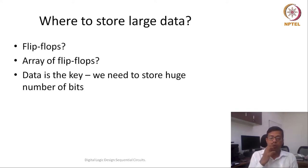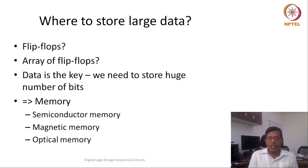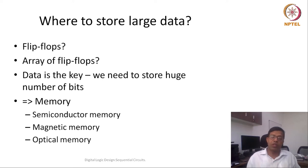Wherever we are storing this data, those structures or units can be called memory. Now, if those memory structures are made up of silicon — any form of silicon — then we call it semiconductor memory, because they are made up of transistors or combinations of transistors, possibly different types. All of them can be categorized as semiconductor memories.